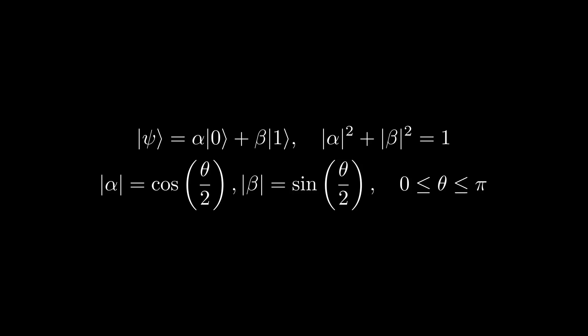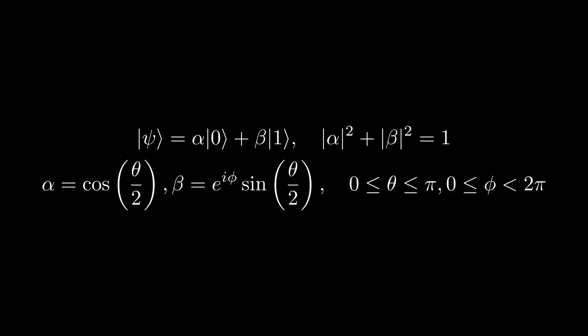Since we can ignore global phases, we have that without loss of generality, we can set alpha equal to cosine of theta over 2 and beta equal to e to the i phi times sine theta over 2 for some phi in the range from 0 to 2 pi.